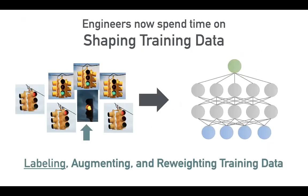What we realized, digging into this area a little bit more, is that engineers are spending a lot of their time just shaping their training data. This includes labeling, augmenting, re-rating different samples, doing error analysis, sometimes going back and relabeling parts of the data because they had incorrect ground truth labels. Every aspect associated with training data right now is fairly manual and tedious.